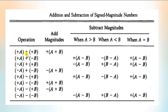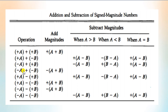Here we have the first and fourth conditions. In the first condition, we have two numbers A and B with the same sign — plus. So we add A and B and put the positive sign with the result. In the fourth case, we have to add negative A plus negative B. The signs of these two numbers are both negative — both are the same. So in this case also, we add the two magnitudes and put the negative sign in the result.